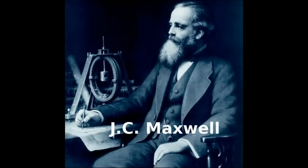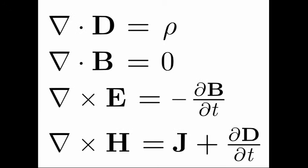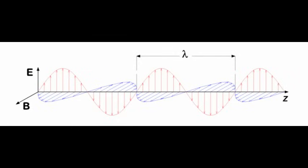Around 1880, the brilliant scientist James Clerk Maxwell developed the mathematical theory of electromagnetism. His theory predicts that electromagnetic waves propagate through space at the speed of light.